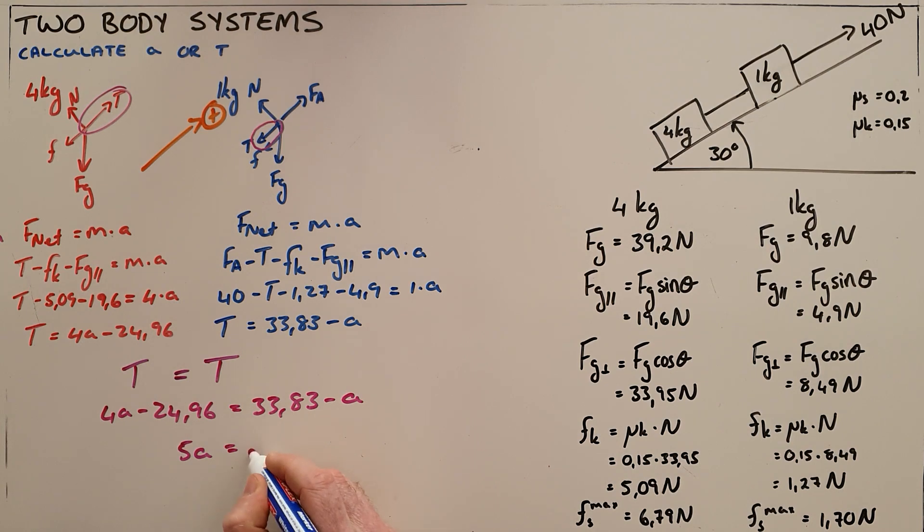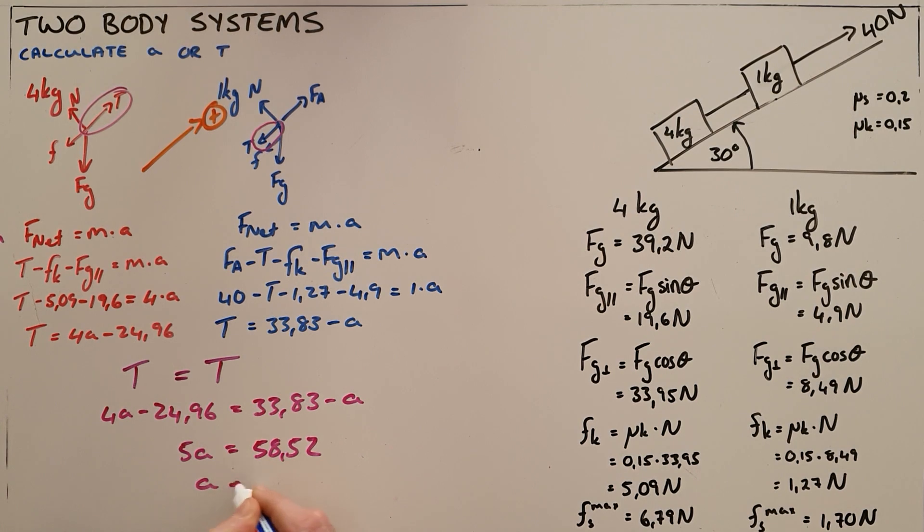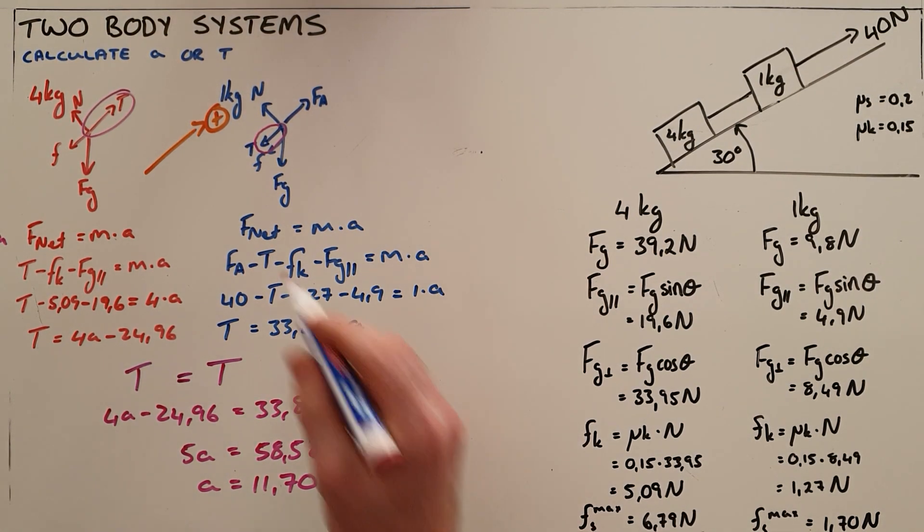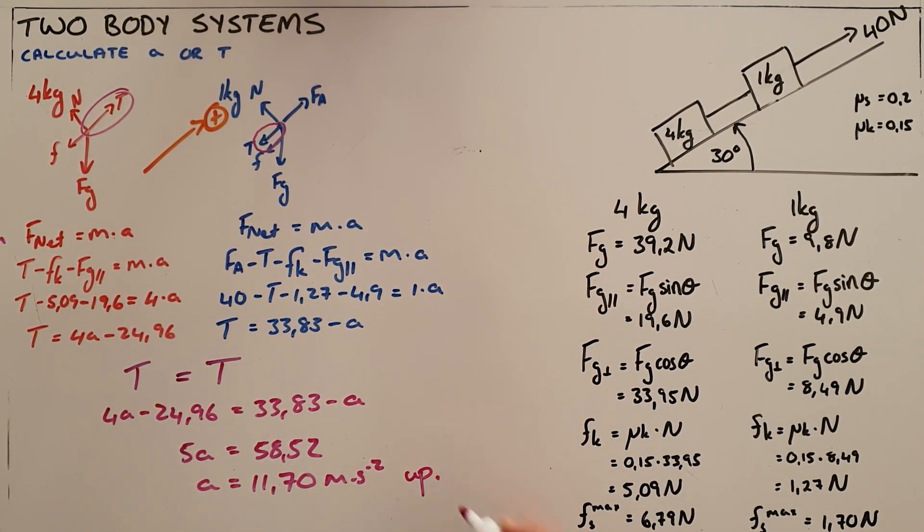Which we find to be here an acceleration of 11.70 meters per square second. Obviously the fact that this value is positive means it's in the positive direction so it must be up the slope.